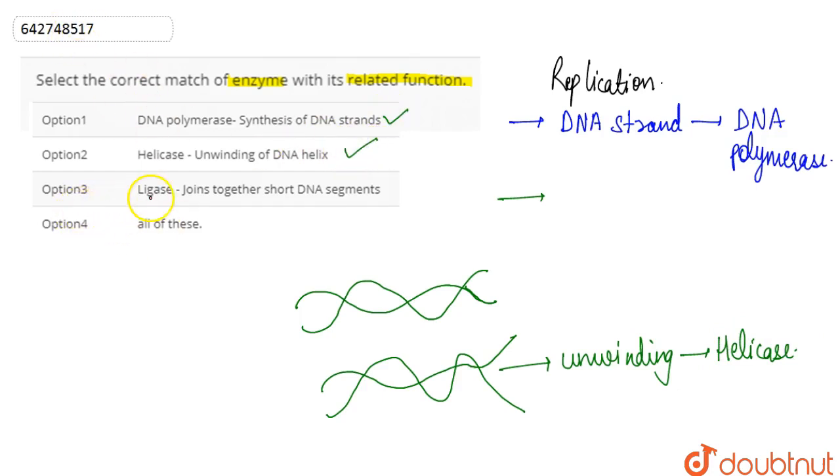Option three is ligase, which basically joins together short DNA segments. Ligase enzyme is basically also known as the genetic glue because it serves the purpose of joining the DNA segments.